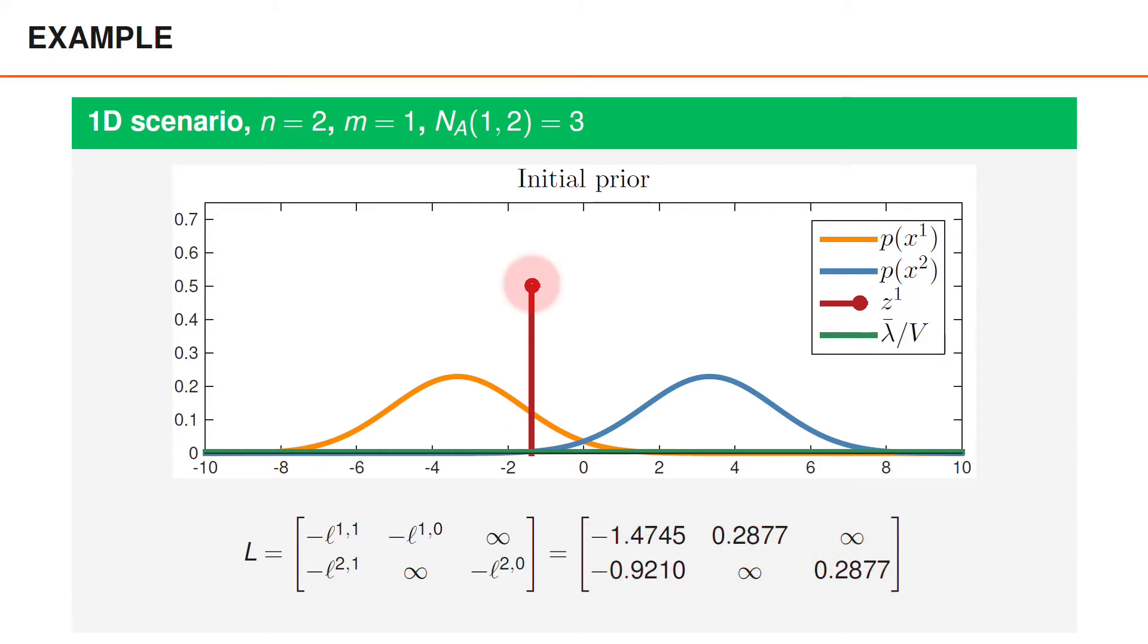We note that the single detection is slightly closer to the mean for object one than to the mean for object two. This means that associating to object one has a bit higher likelihood than associating to object two. We can see this in the cost matrix—the corresponding assignment cost is lower than for assigning to object two.